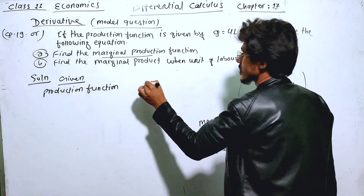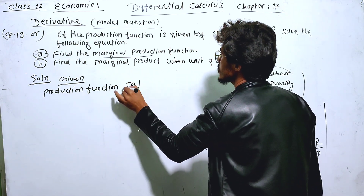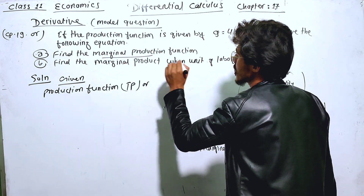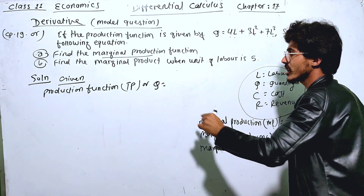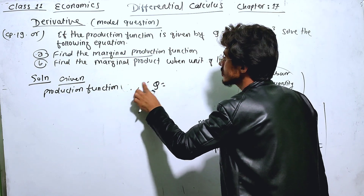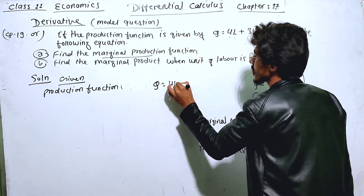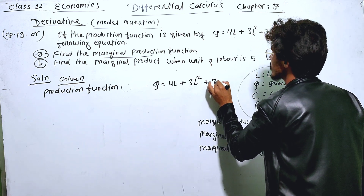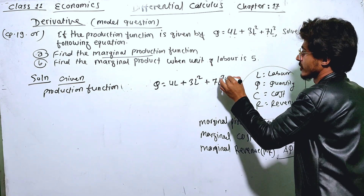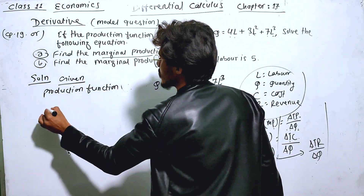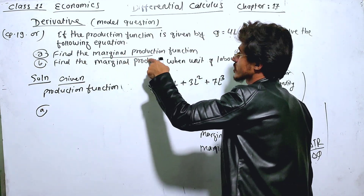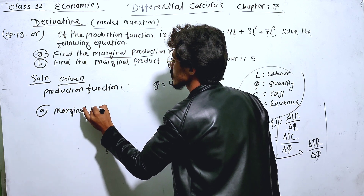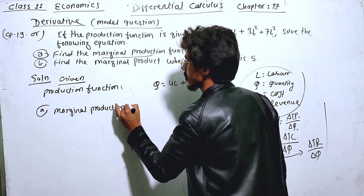The production function — total production — is Q equal to 4L plus 3L squared plus 7L cubed. We need to find the marginal production function.